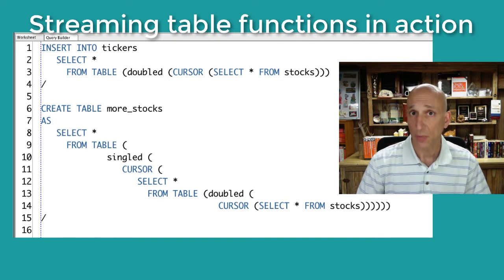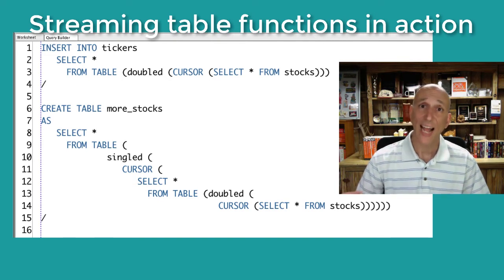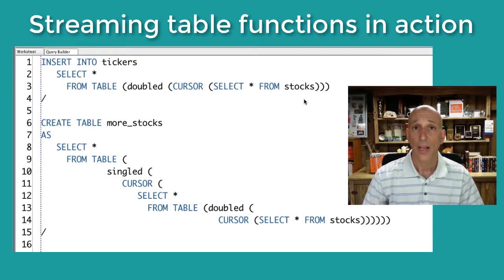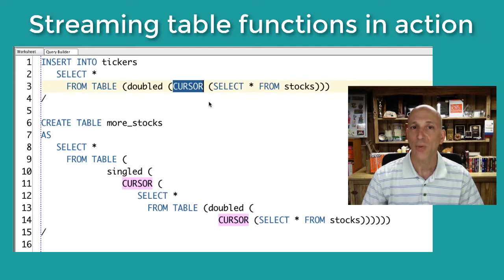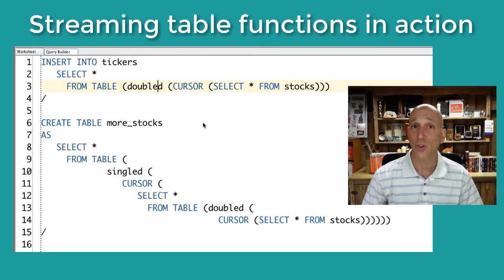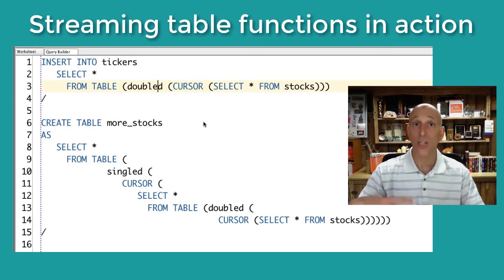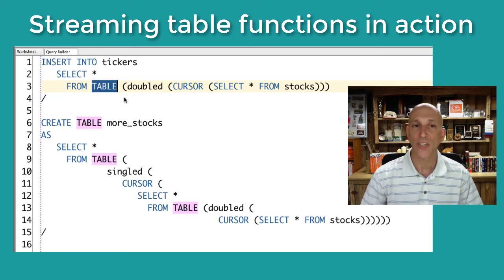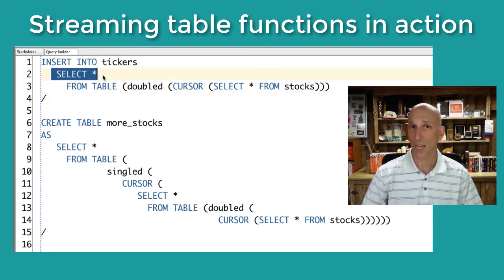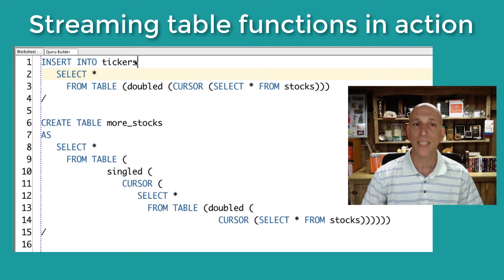Before diving into the implementation, let's look at how it appears inside a SQL statement. Take all the data from the stocks table — it's an actual select statement, not a dynamic SQL string. Convert it into a cursor variable with the cursor expression. Pass that cursor variable into my function called doubled. That performs the transformation algorithm and passes back a nested table of rows. Convert that to a relational table format with the table clause.